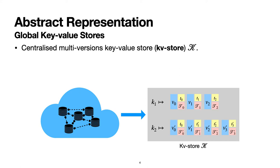Yet these details are not important to the user. In our semantics, we use a global key-value store, or KV store, to abstract the state of a distributed key-value store.